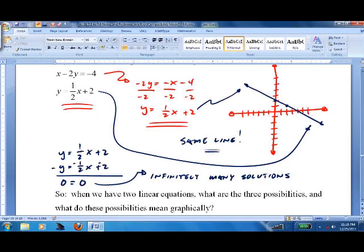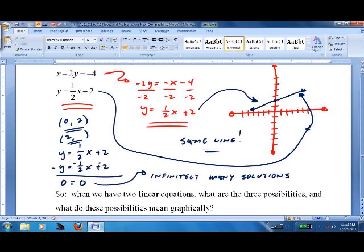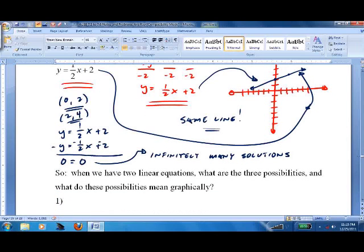Notice it doesn't mean any pairs of numbers work. It just means there's an infinite number of them. For example, in this one, if we put in 0, 2, that would work. That's just one solution. We could also put in 2, 4, that would also work, and so on and so on. So there's just an infinite number of points. They just have to make sure they work.